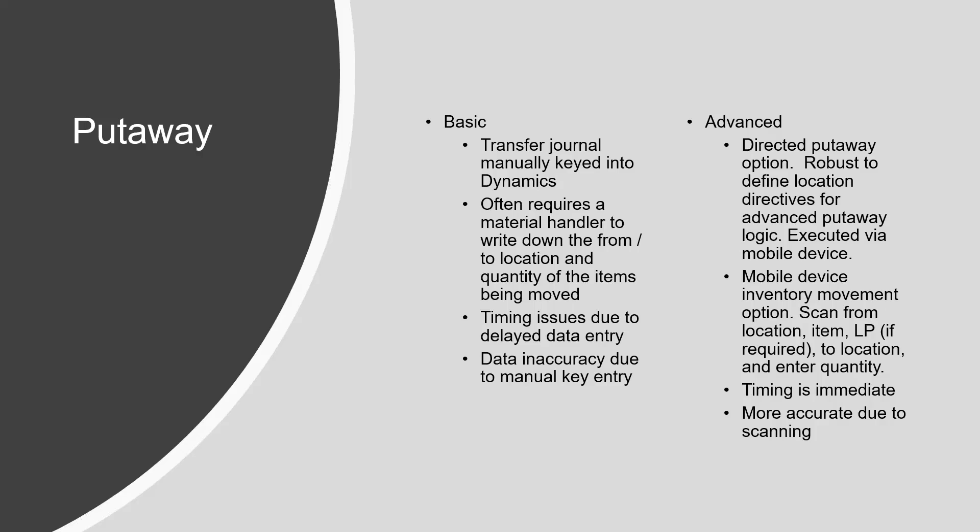Advanced warehousing is much more accurate because it's more scan-and-go versus typing stuff in. It tends to be faster, with a lot less material handling needing to write something down on a purchase order receiving document and then go input it in the system once they've roamed around the warehouse and figured out where to put stuff.